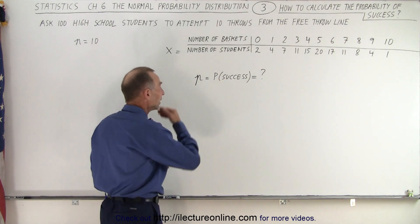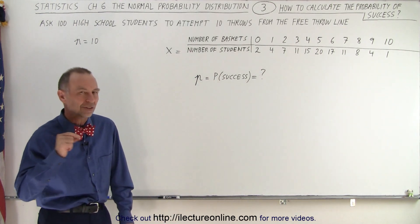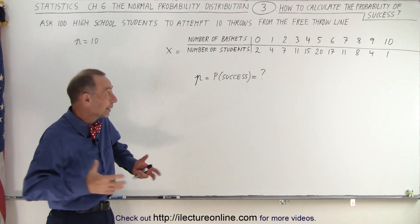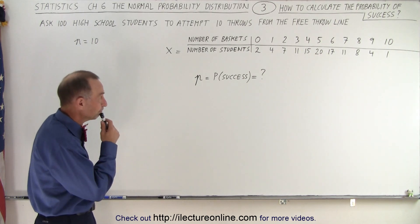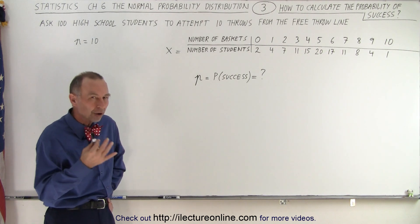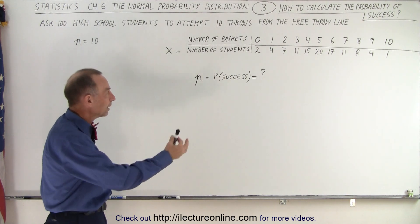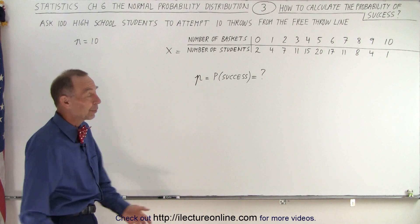So now the question is, how do we calculate the probability of success? What is the probability that a student picked at random will make a certain number of baskets? So what percentage of the baskets will a randomly picked student make? That's essentially what we're asking.